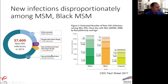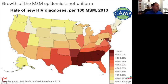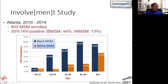In the U.S., new HIV infections disproportionately occur among MSM, and largely among Black MSM. Depending on the year, between 65 and 70 percent of new infections are experienced by gay and bisexual men. By race, in some years Black MSM have more new infections even though Black MSM only constitute 13 percent of the population. The growth of the epidemic is not uniform — in the southern U.S., rates of new HIV diagnoses are more than one percent per year.